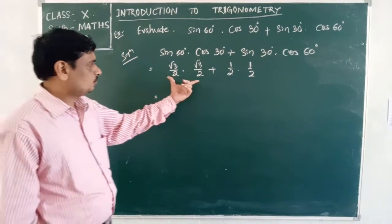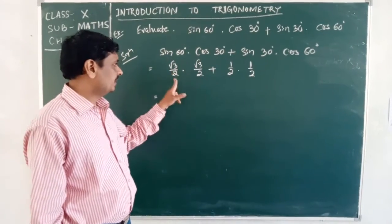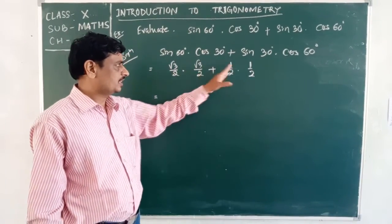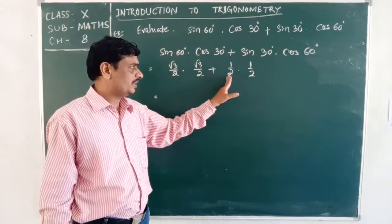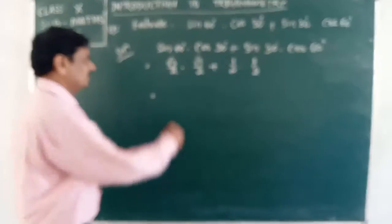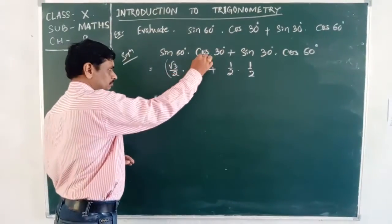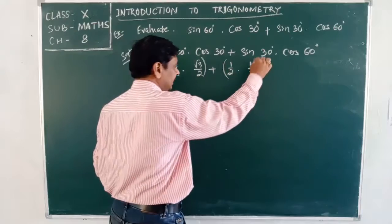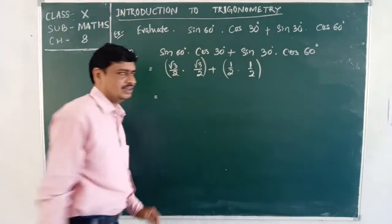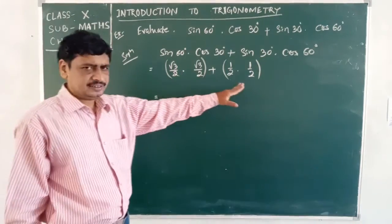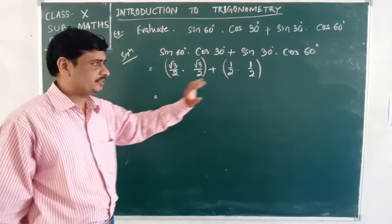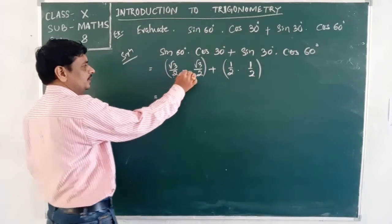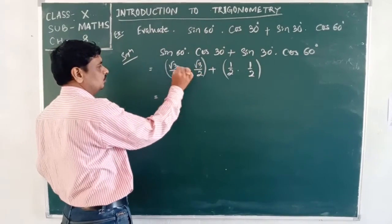Now we have two terms: (√3/2) × (√3/2) and (1/2) × (1/2). We will multiply these two pairs separately and then add the results.